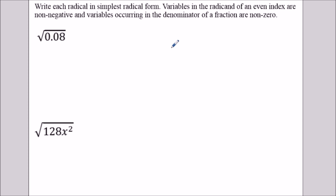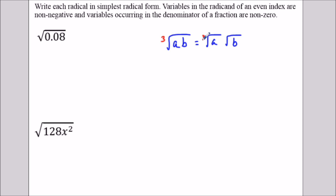One of the first concepts we're going to make use of is that anytime I have the square root of a times b, I could break this down into the square root of a times the square root of b. We're assuming that the variables are non-negative when we have an even index, so for square roots a times b has to be positive. This also works for cube roots, fourth roots, or any other type of roots. And when we have division, we could break this into two separate radicals as well.